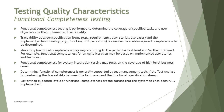The third topic is 4.2.3: Functional Completeness Testing, which involves performing testing to determine the coverage of specified tasks and user objectives by the implemented functionality. A user story may have different tasks, but how much has been completed is what we're measuring in terms of coverage. Coverage measures such as statement coverage, decision coverage, conditional coverage, or cyclomatic complexity all give input on the coverage part, showing how much of a particular requirement has been covered in terms of completeness.